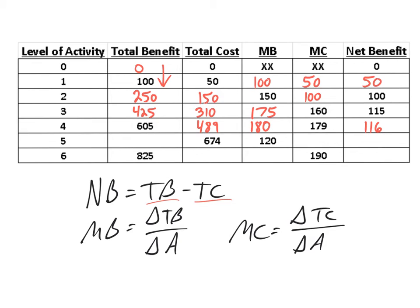Let's look at the next row where we have total cost and marginal benefit. We know marginal benefit is 120, so what value must total benefit be to produce a marginal benefit of 120? That value is 725. Then 725 minus 674 gives us a net benefit of 51. And marginal cost goes from 489 to 674 divided by 1, which is 185.